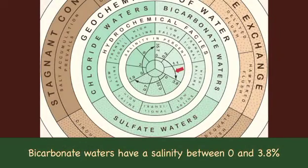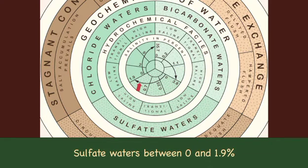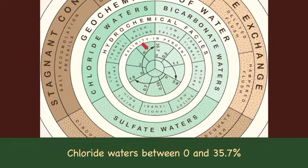Bicarbonate waters have a salinity between 0 and 3.8%, sulfate waters between 0 and 1.9%, and chloride waters between 0 and 35.7%. Chemical compounds of higher solubility — for instance, sodium chloride — are found in deeper water in greater relative abundance. Moreover, waters of high salinity have higher specific gravity and therefore tend to occupy the lower portions of the water-bearing strata.